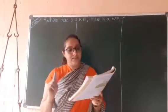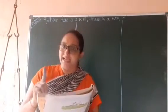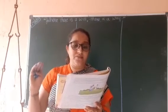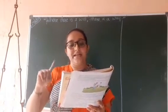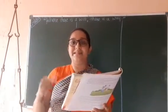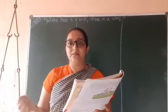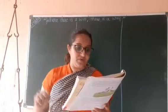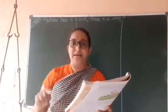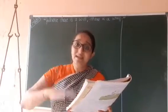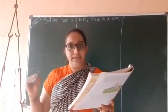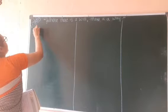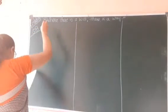Question number one will be homework for you. Question A is on page number seven — it is very easy. What you have to do is fill in the flowchart with one example for each kind of noun. For example, abstract noun: sadness, happiness, intelligence. Collective noun: a herd of sheep. Proper noun and common noun: boy. In this way, give an example of each noun.